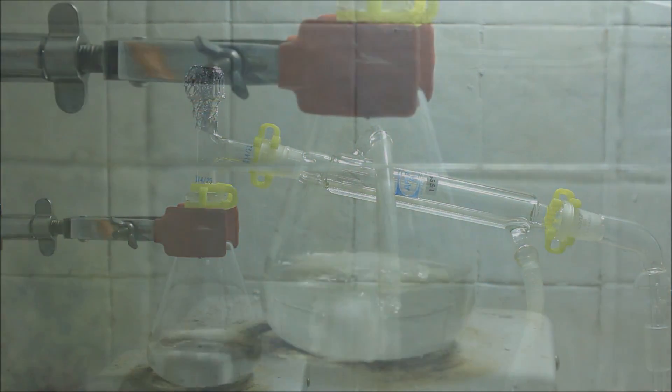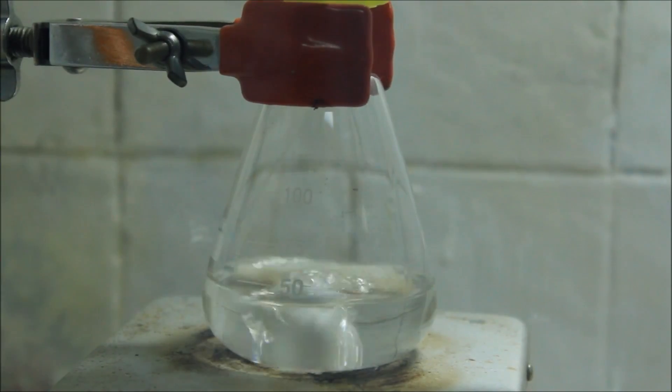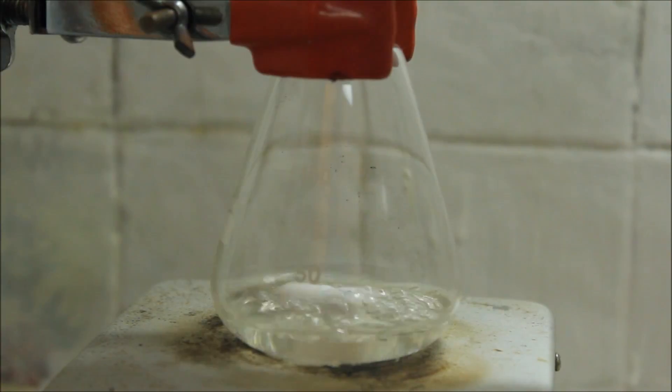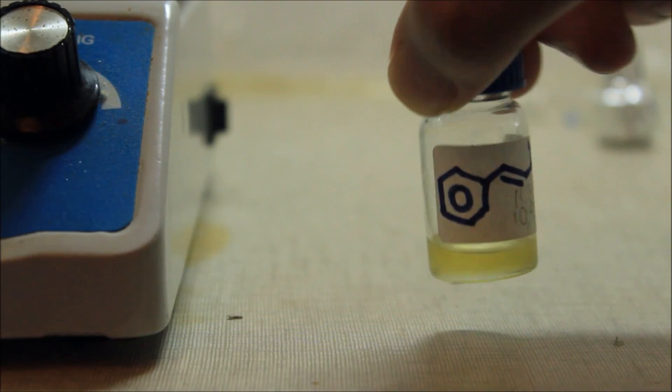The majority of the solvent is removed using a simple distillation setup. The last amount of solvent is removed by flushing air through it. At the end, we obtained a slightly yellow oil.